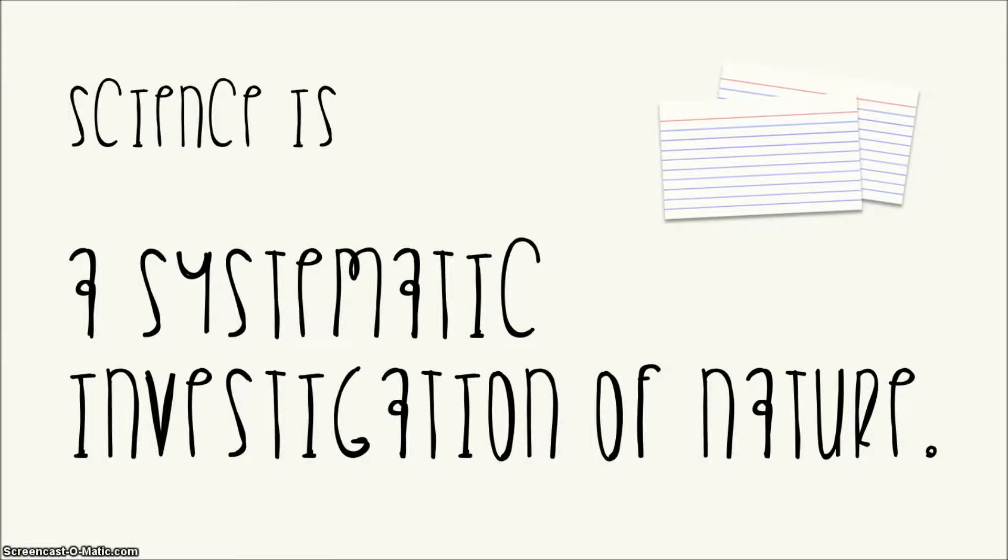So in this class we're going to define science with this phrase right here, a systematic investigation of nature. Now this is one of those things that you should probably write down, and if it's something you should write down, I like to use the little note card icon up here in the top right hand corner. You'll see those throughout the Digital Replays. Science is a systematic investigation of nature. That means that we have a step-by-step process, an orderly process of looking at, exploring, observing the world. Measuring it, collecting data. We have some systematic way of doing that.